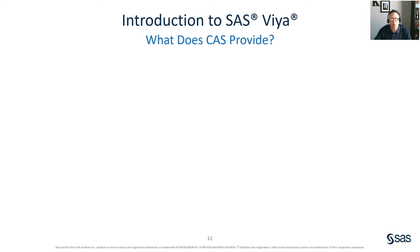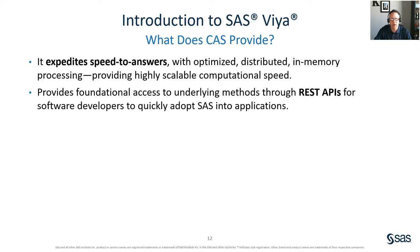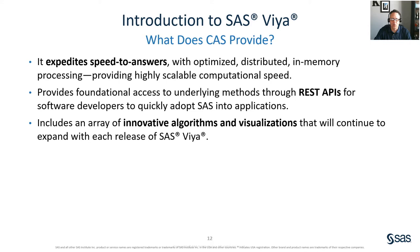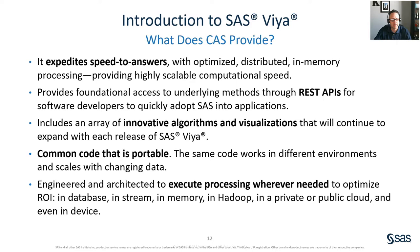What does CAS provide? CAS expedites speed to answers with optimized distributed in-memory processing that provides highly scalable computational speed. It provides foundational access to underlying methods through REST APIs for software developers to quickly adopt SAS into their own applications. It includes an array of innovative algorithms and visualizations that will continue to expand with each release of SAS Viya. It provides common portable code — the same code works in different environments and scales with changing data. It's also engineered to execute processing wherever needed, including in-database such as Hadoop or Teradata, streaming data, data in memory, data in a private or public cloud, and also in device.